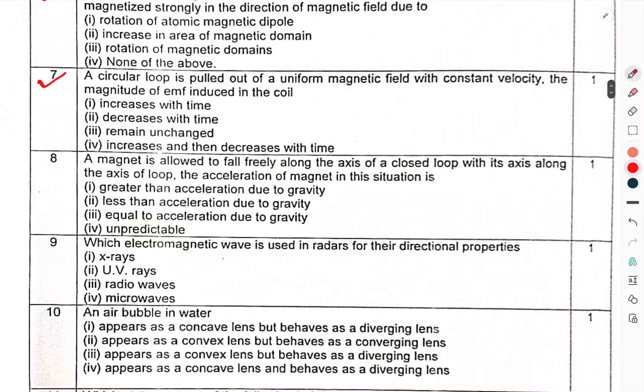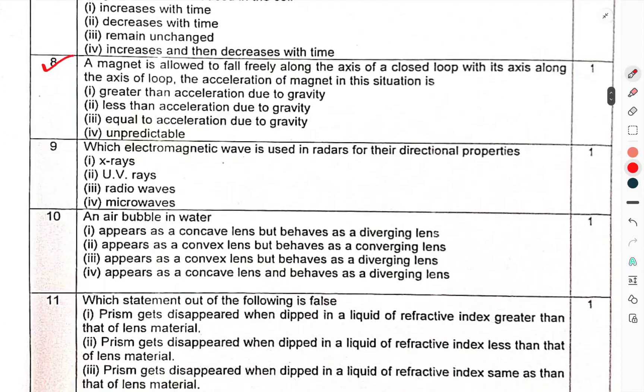Question 7: A circular loop is pulled out of a uniform magnetic field with constant velocity, the magnitude of EMF induced in the coil. Question 8: A magnet is allowed to fall freely along the axis of a closed loop with its axis along the axis of the loop. The acceleration of the magnet in this situation is?